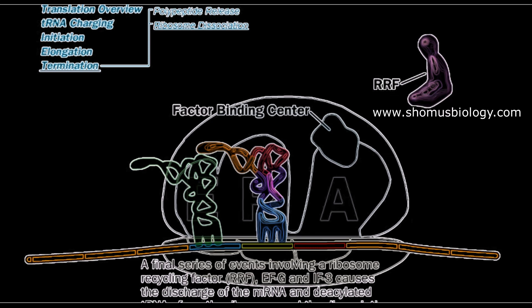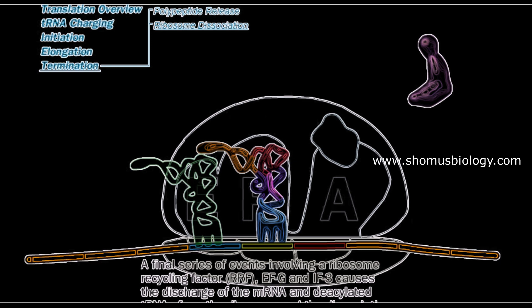We also need initiation factor 3 (IF3). If you recall, IF3 can separate the large ribosomal subunit from the small ribosomal subunit. We need it along with ribosome recycling factor.